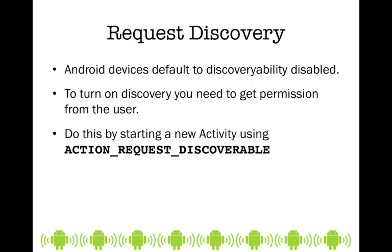On Android, discoverability is automatically set to disabled, so we need to get permission from the user to turn this on. In the manifest file, this is where we have Bluetooth admin permissions set to be able to discover other devices. We're going to begin this process by implementing a new activity using action request discoverable, which will show the user a dialog where they can choose to be discovered or cancel that operation.